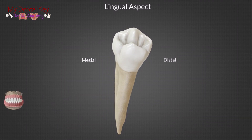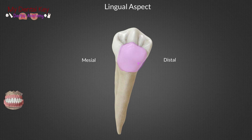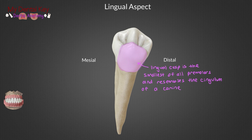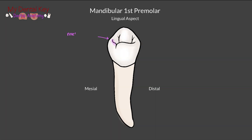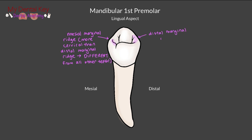Moving on to the lingual view, pay close attention to the lingual cusp. Out of all of the premolars, the first mandibular premolar has the smallest lingual cusp — it's about half the size of the buccal cusp. The lingual cusp resembles the cingulum of a canine. We can also see the mesial marginal ridge is more cervical than the distal marginal ridge. From this view, we can also see the mesial lingual developmental groove.